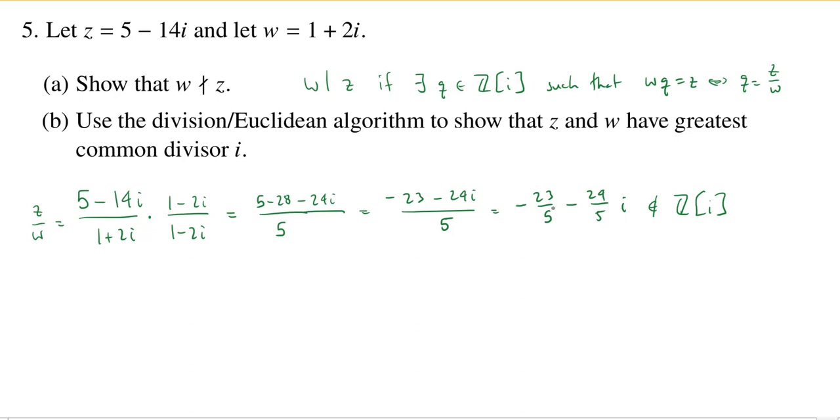How do I know it's not a Gaussian integer? Well, look what we got here. These are not integer coefficients, right? The only way you get a Gaussian integer is when it looks like a plus bi, and a and b are integers. So this verifies that w does not divide z.